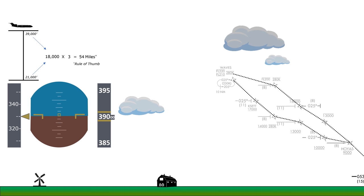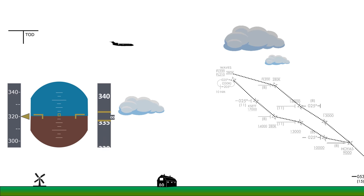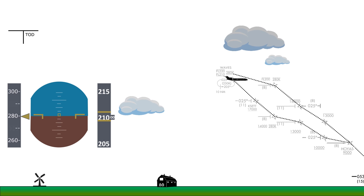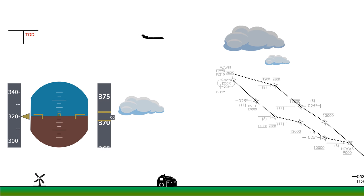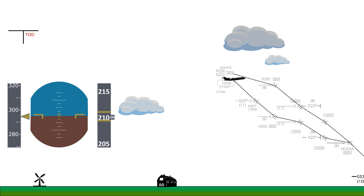Whatever point we decide to start the descent phase, we call this our top of descent, or TOD. We'll start by slowing to a descent airspeed of around 320 knots, then dropping down to the minimum altitude at Waves of flight level 210. We should reach this altitude before Waves to give us time to slow down to the mandatory 280 knots. If we miss the TOD point, we'll either be too high or too fast at Waves. For example, if we start deceleration too late, we might make the altitude at FL210 but not have enough space to decelerate, and we'll bust the 280-knot speed restriction.